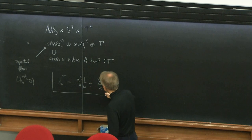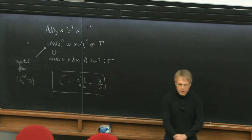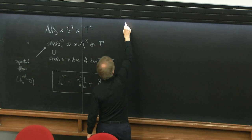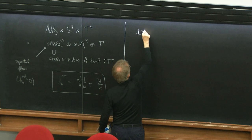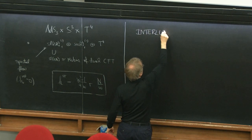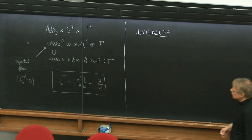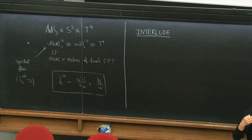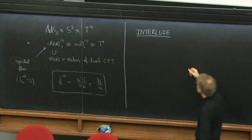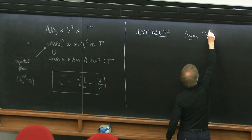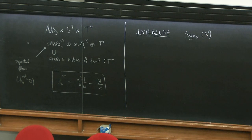This looks exactly like the spectrum of the symmetric orbifold. I want to start today's lecture by giving a brief interlude for those not familiar with what the symmetric orbifold of T4 looks like. To make life simple, I'm going to discuss the symmetric orbifold of S1, of one free boson, and then it will be clear how that generalizes to the case of T4.